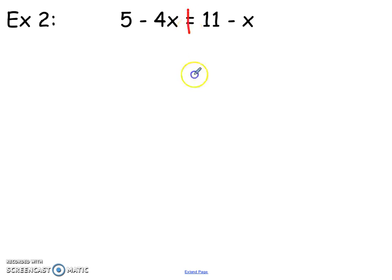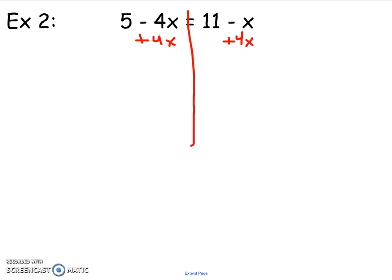One more example for tonight. 5 minus 4x equals 11 minus x. Here I've got a negative 4x and a negative x. To undo these, we need to add them on the opposite side. So I can either add 4x to each side or I can add x to each side. To keep things positive, I'm going to go ahead and add 4x to each side. When we do that, our negative 4x and positive 4x cancel out. So I just have 5 on the left. Then I'm going to bring down my 11. If I owe x and I have 4x's, I'm going to have 3x's left over.